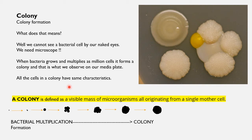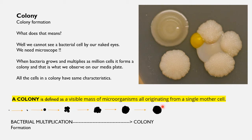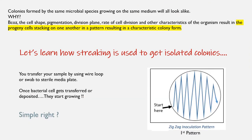All cells in a colony have the same characteristics because, starting from one bacterial cell, that cell divides into two daughter cells, and those daughter cells further divide — multiplying a lot — to form a colony. That's why all cells originate from a single mother cell and share the same characteristics. A colony is defined as a visible mass of microorganisms all originating from a single mother cell. Bacterial multiplication results in colony formation.